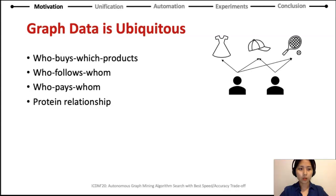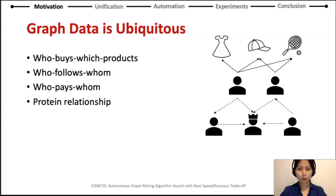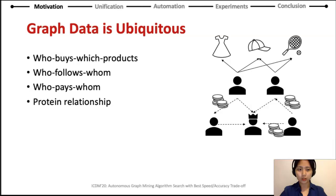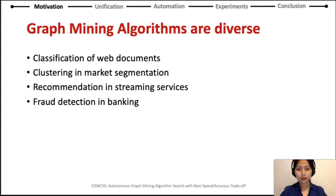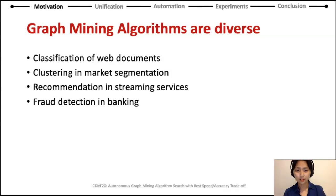Many real-world problems are naturally modeled using graphs. Who buys which product in online marketplaces? Who follows whom in social networks? Who pays whom in payment networks? And even protein relationships in biological networks are modeled as graphs. Graph mining provides solutions to practical problems running on those graph-structured data, such as classification, clustering, recommendation, or fraud detection.